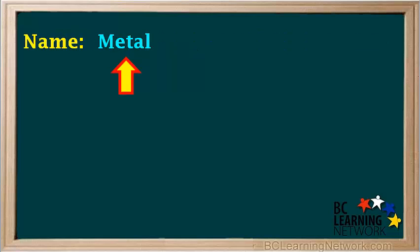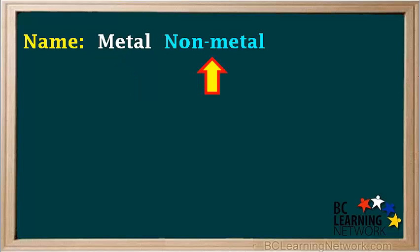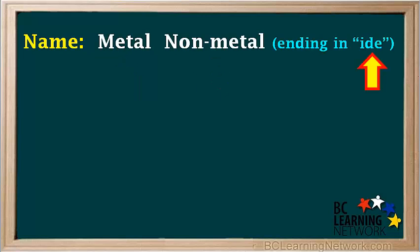In the name of a binary ionic compound, the metal name is written first, and we just use the name for the metal that's on the periodic table. The metal name is followed by the non-metal name. We look up its name on the periodic table and change it so it ends in the letters IDE.